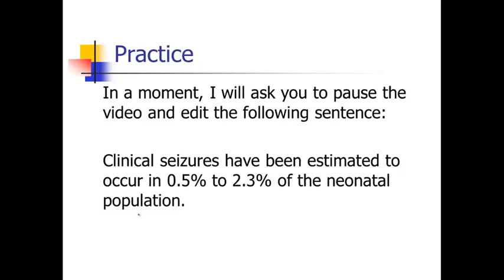So now I'm going to go through my edit on this sentence. 'Clinical seizures have been estimated to occur' — that seems like a lot of extra words. How about we just get rid of 'have been estimated to' and say 'clinical seizures occur.' Some of you may feel that's being too direct, wanting to hedge with 'it's been estimated to be.' But notice the statistics in this sentence — 0.5% to 2.3% — that's a range, so it's obvious to the reader you're talking about estimates. So it's okay to just say 'clinical seizures occur,' and we can give references for those numbers at the end.